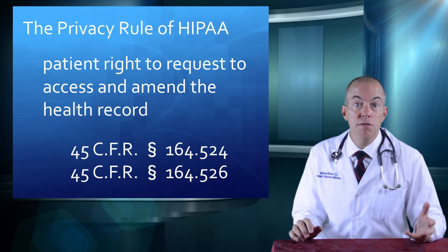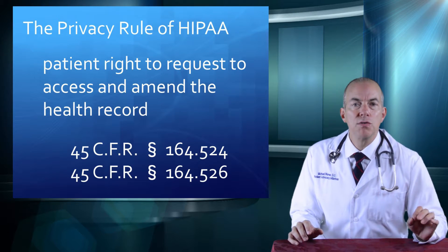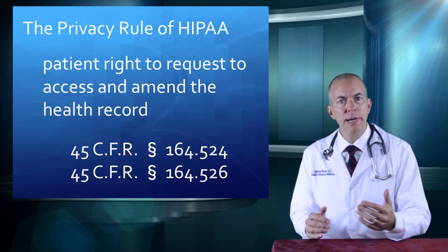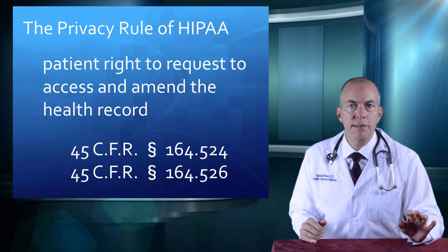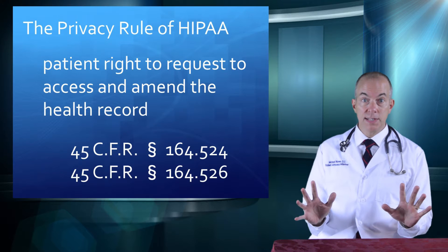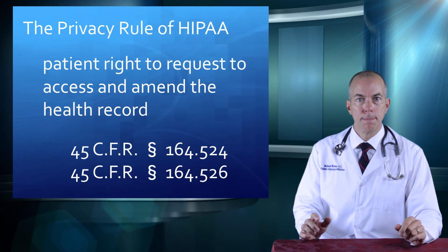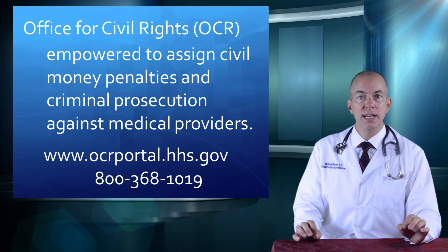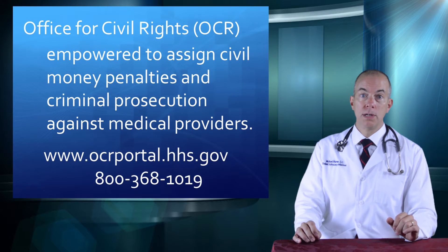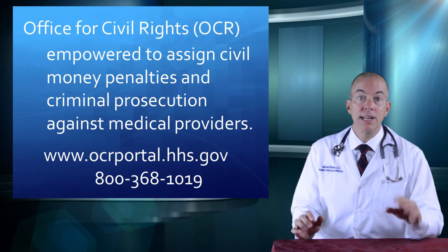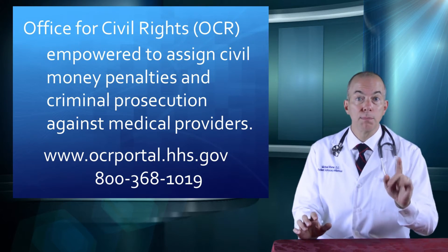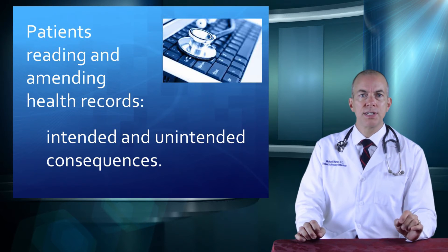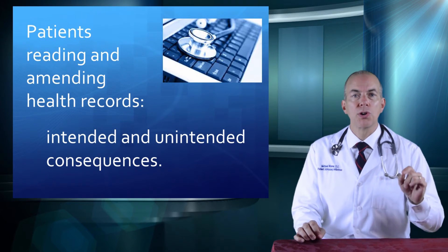This means that patients can read and review what is written in the record. Patients also have the right to request to amend a health record, meaning they have an opportunity to correct mistakes and contribute information to their health record. Detailed rules have been legislated, and agencies have poised themselves to help patients and protect their rights. The Office for Civil Rights, OCR, is empowered to assign civil money penalties and criminal prosecution against providers who violate the Privacy Rule of HIPAA. A government online complaint portal and toll-free telephone support both exist to receive complaints and initiate investigations. Patients' reading and amending the health record has clear intentions to make the health record accurate and to encourage patient engagement in healthcare.